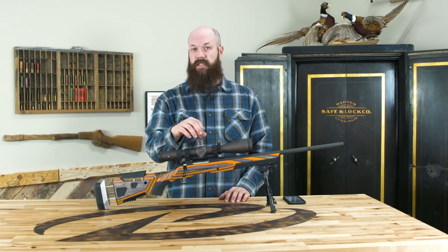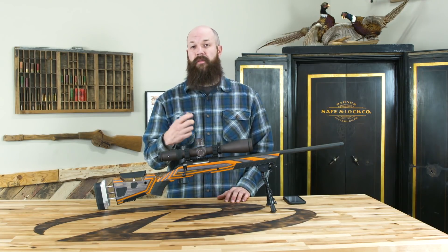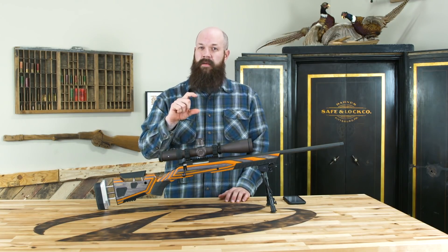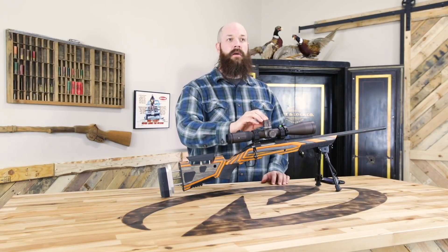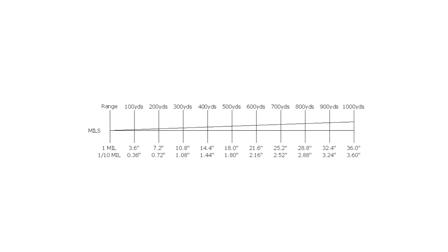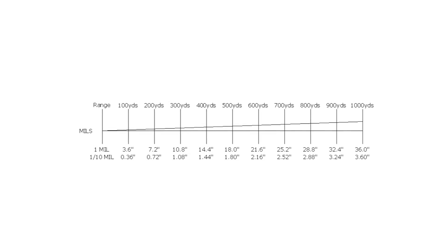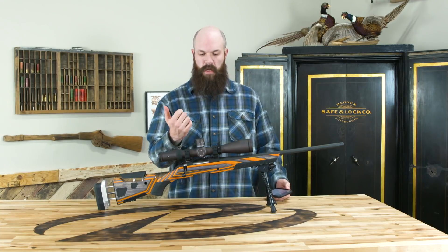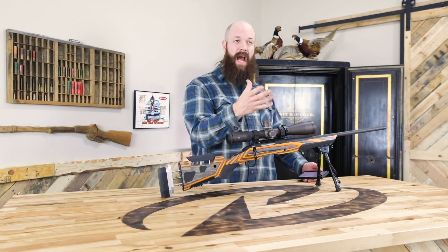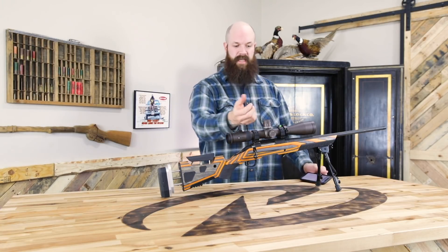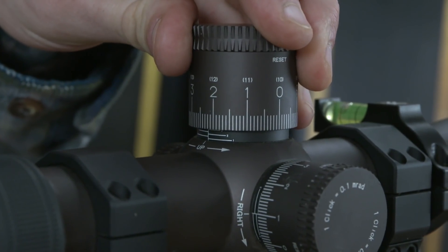Next, we have a rifle set up with a scope that has mill adjustments. A mill and MOA are very similar — the only difference is how you convert them to inches. With minutes, it's one inch at 100 yards. With a mill, it's 3.6 inches per mill. It's a little more math, but if you just use an app it makes it way easier. This rifle is sighted in at 200 yards. At 500 yards our app tells us the bullet will be 45 inches low — in minutes that's nine minutes up, but since the scope is mill, our app says we need to come up 2.5 mills. You just turn your scope to 2.5 and it'll get your bullet back on target.